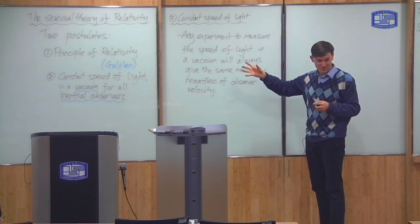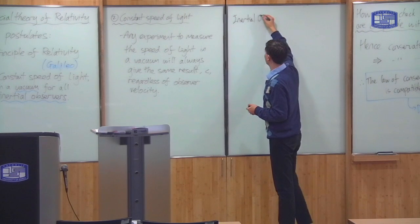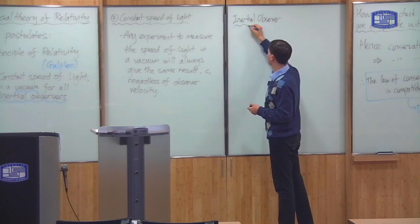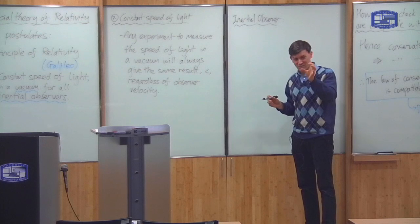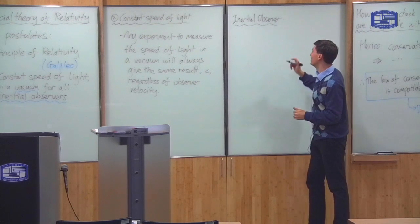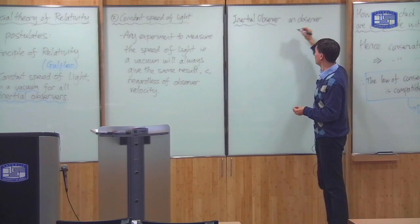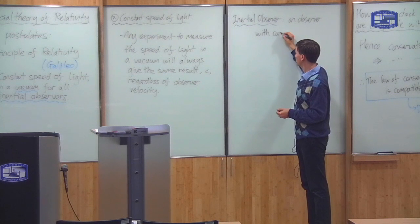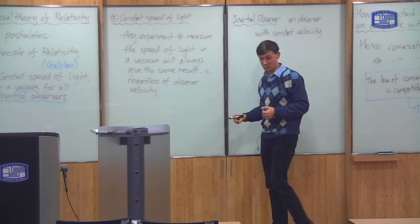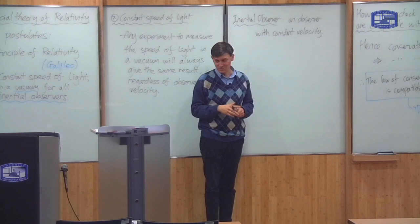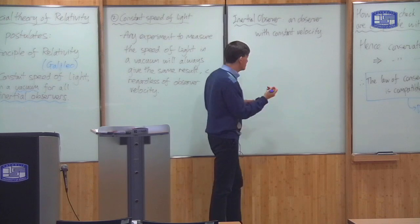However, there are a few issues with it which I want to talk about now. The first thing we have to specify is what is meant by an inertial observer. In special relativity, it simply means an observer with a constant velocity. So any observer with a constant velocity in special relativity is described as an inertial observer.